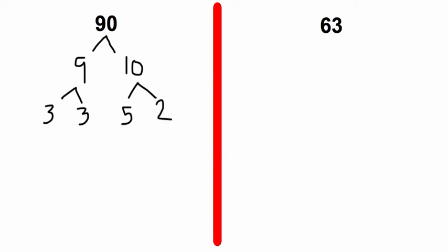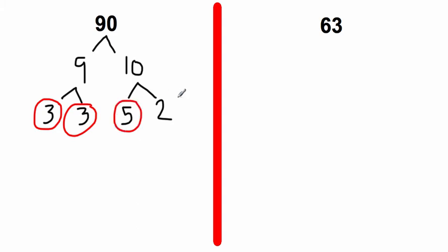Now we're going to look at the numbers on the bottom of our tree. We have 3, which is prime — there are only two numbers that go into 3: 1 and 3 — so we're going to circle both our 3s. 5 is also prime; there are only two numbers that go into 5: 1 and 5. And we already know 2 is prime, so we'll circle that as well. We circle all the prime numbers in our factor tree. The prime factorization of 90 — we want to write these numbers from smallest to largest.